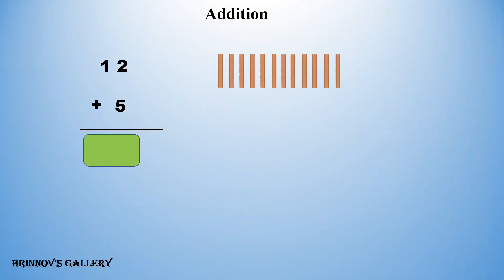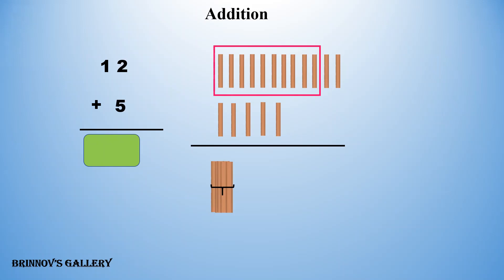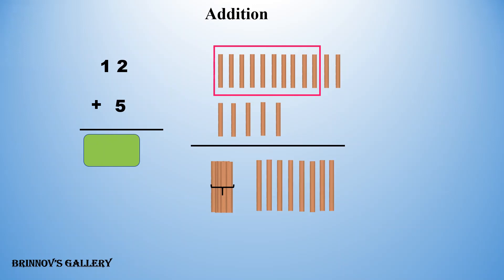12 plus 5. Let's make a group of 10. 1, 2, 3, 4, 5, 6, 7, 8, 9, 10. We have a bundle of 10 and remaining 1, 2, 3, 4, 5, 6, 7 — 7 ones. So we have one 10 and 7 ones. So, 12 plus 5 is equal to 17.